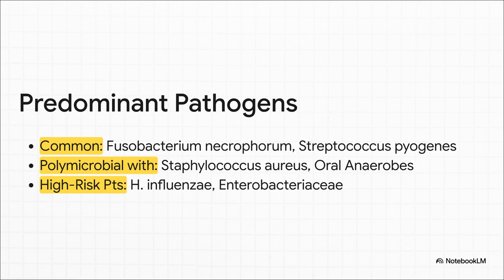So who are the usual suspects? These infections are very often polymicrobial — a mix of different bacteria all working together. You'll almost always find anaerobes like Fusobacterium necrophorum, a classic culprit, working alongside aerobes like Streptococcus pyogenes. Staphylococcus aureus is also a very frequent finding. And in certain patients — say someone who's immunocompromised — you have to broaden your differential to include organisms like Haemophilus or even Enterobacteriaceae.